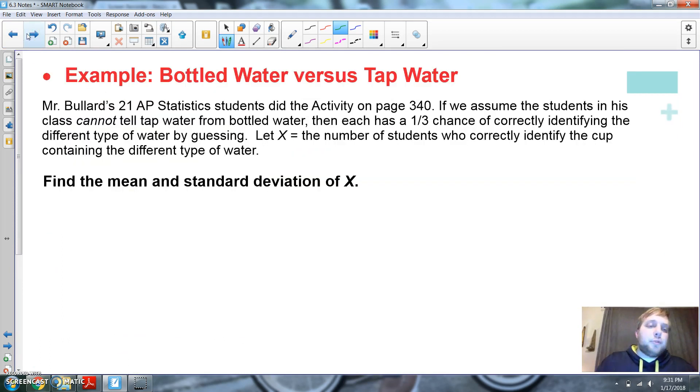Example. Bottled water. Mr. Bullard, 21 AP stats students did the activity on page 340. We assume that students in this class cannot tell tap water from bottled water. Then each has a 1 in 3 chance of correctly identifying the different type of water by guessing. Let X be the number of students who correctly identify the cup. Find the mean and standard deviation of how many we should expect.